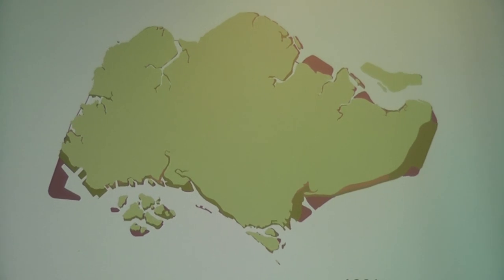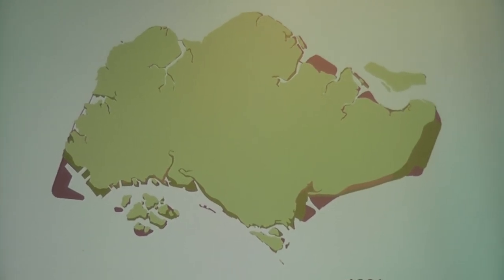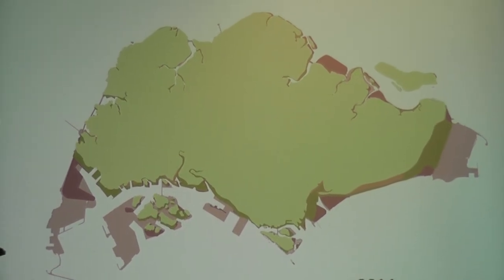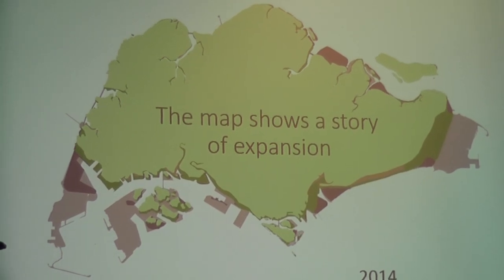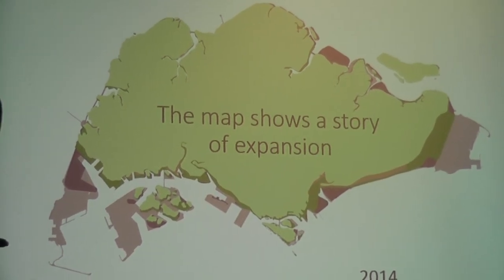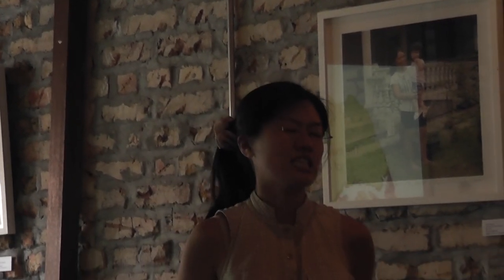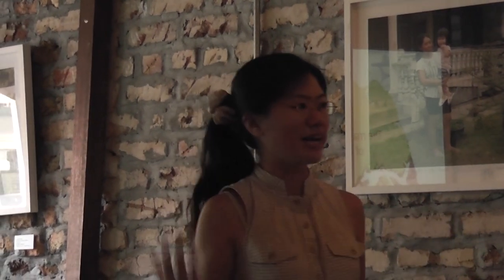About 30-odd years ago it had grown even more — it was starting to spread its weight. Then another 10 years later it grew further, and this is pretty much like last year. What I'm trying to show you is that just by adding different layers of data or information, you can really see a story forming. In this simple map that has no words, it's showing you that Singapore as a land is growing, is expanding.